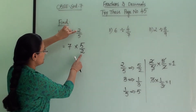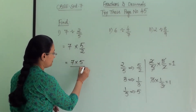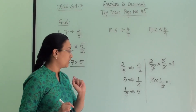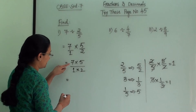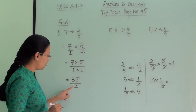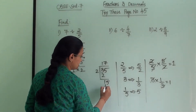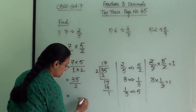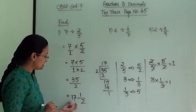So numerator becomes denominator and denominator becomes numerator. Now we follow simple multiplication: 7 × 5 divided by 1 × 2. We check if we can reduce anything — no. So we get 35/2. This is an improper fraction, so we divide: 35 ÷ 2 gives quotient 17 and remainder 1. So the answer is 17 and 1/2.